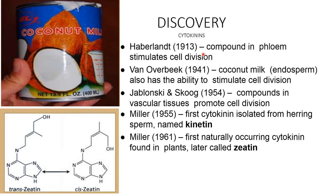Discovery of cytokinins: Haberlandt in 1913 found that a compound in the phloem stimulates cell division. Van Overbeek in 1941 found that coconut milk (an endosperm) also has the ability to stimulate cell division. Jablonsky and Skoog in 1954 found that a compound in vascular tissue promotes cell division. Miller in 1955 isolated the first cytokinin from herring sperm, named kinetin. In 1961, the first naturally occurring cytokinin found in plants was later called zeatin.